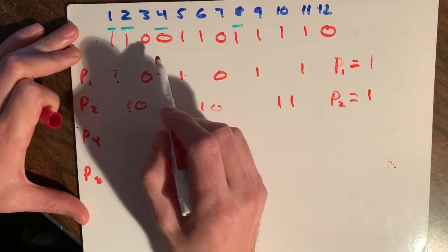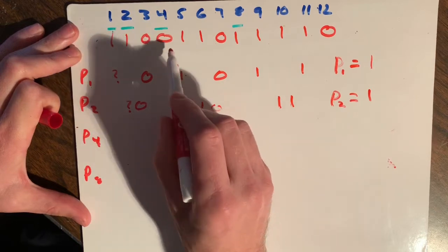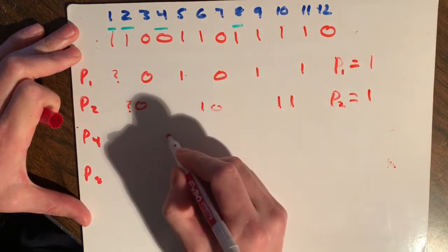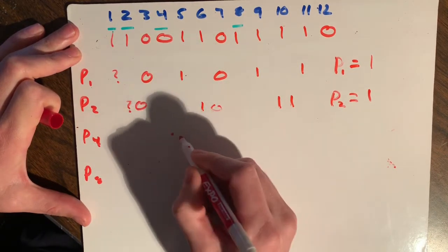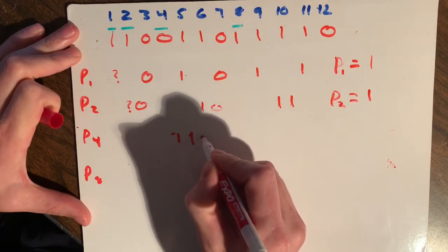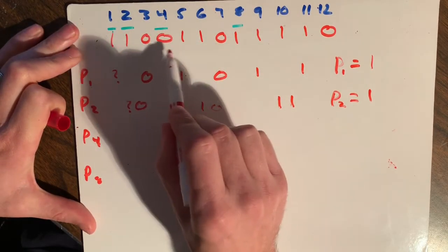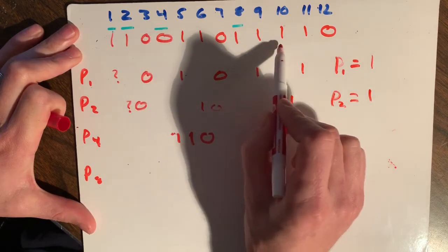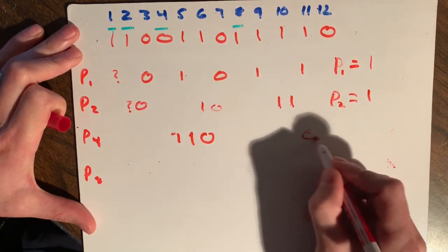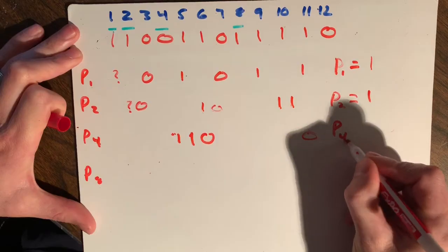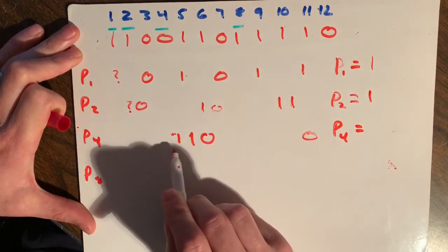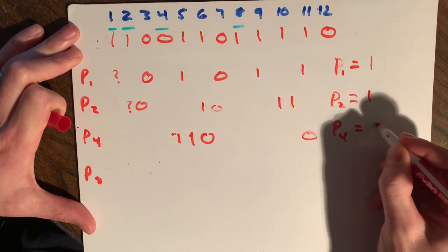Next one down is parity bit four. So we're going to check four, which is... First one doesn't really matter anyway because it's a parity bit, but we'll just put one, one, zero. So we've checked four. Skip four. We need another zero at the end. So P4, we have an even number, is going to be zero.